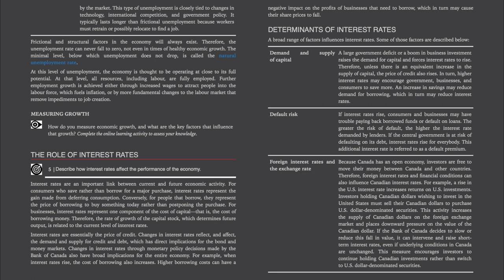Determinants of Interest Rates. A broad range of factors influence interest rates. Demand and Supply of Capital: a large government deficit or a boom in business investment raises the demand for capital and forces interest rates to rise. Therefore, unless there is an equivalent increase in the supply of capital, the price of credit also rises. In turn, higher interest rates may encourage government, businesses, and consumers to save more. An increase in savings may reduce demand for borrowing, which in turn may reduce interest rates. Default Risk: if interest rates rise, consumers and businesses may have trouble paying back borrowed funds or default on loans. The greater the risk of default, the higher the interest rate demanded by lenders. If the central government is at risk of defaulting on its debt, interest rates rise for everybody. This additional interest rate is referred to as a default premium.